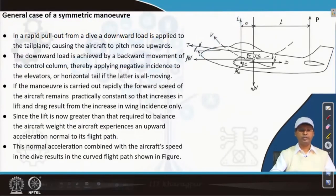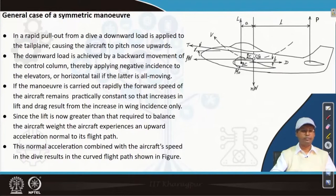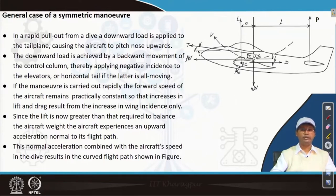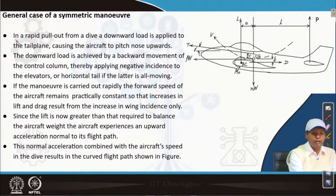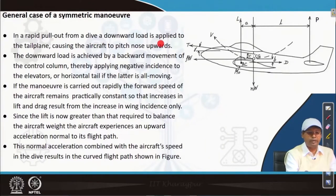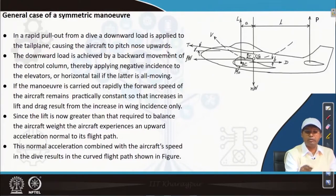Before we go into detail, it is time to have some understanding of symmetric manoeuvre. On the right-hand side, if you look, this is an aircraft in a pull-out manoeuvre. In a rapid pull-out from a dive, a downward load is applied to the tail plane, causing the aircraft to pitch nose upward.